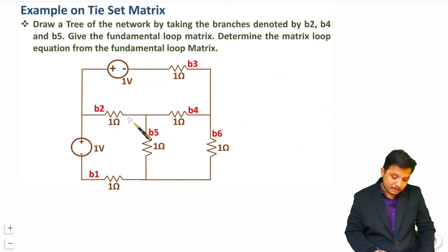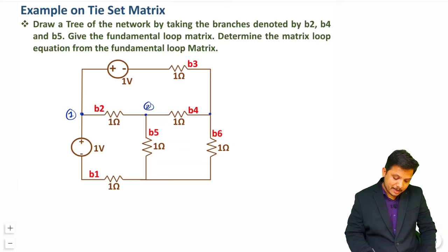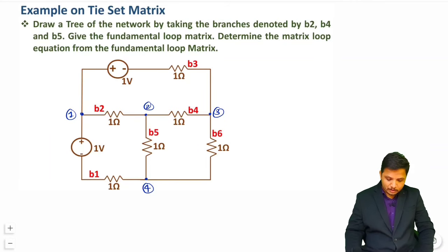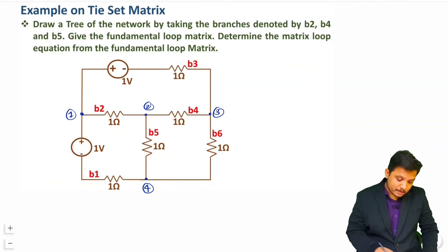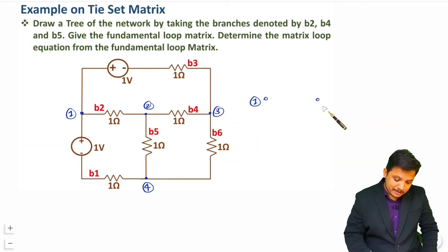First of all I need to show all the nodes present in this circuit. You can see we are having node 1, node 2, node 3, and node 4. Now I will draw these nodes and show you how to draw the graph. I am just considering node positions right now.